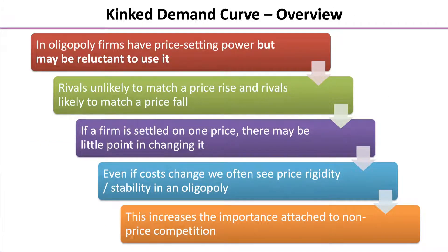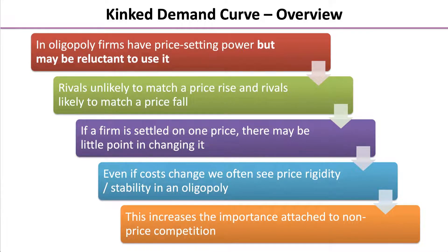In an oligopoly, firms have price-setting power, but they may be reluctant to use it. Rivals are unlikely to match price rises, and rivals are likely to match a price fall. If a firm is settled on one price, there may be little point in changing it. Even if costs change, we often see rigidity and stability in an oligopoly, which places importance on non-price competition and elements of competitive behaviour.